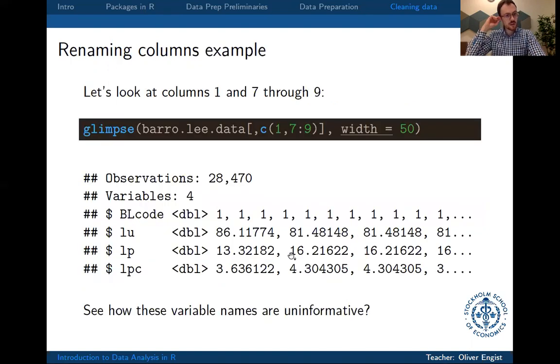So if we look at the data set that we loaded previously, the Barro-Lee data set that contains a lot of economic and demographic data from countries around the world, we can see that the variables here are called BL code, LU, LP, LPC, and without the code book, they're not very descriptive, so it's very difficult to find out what they actually mean.